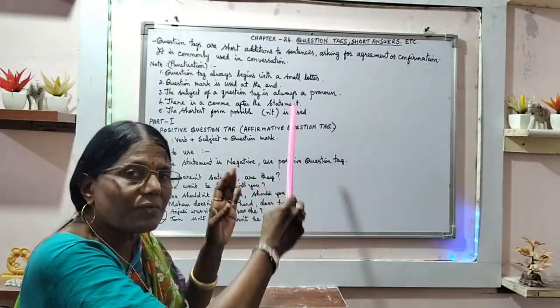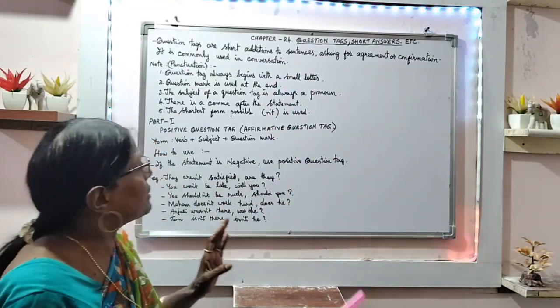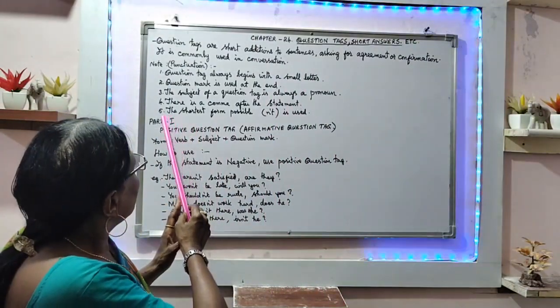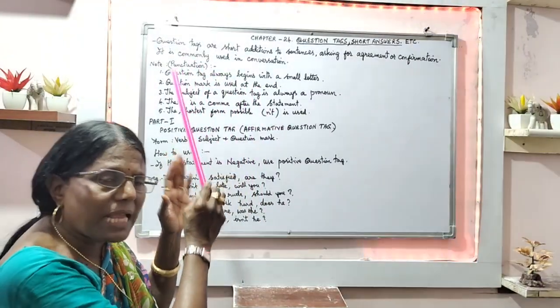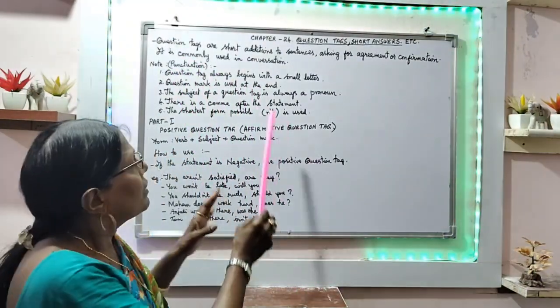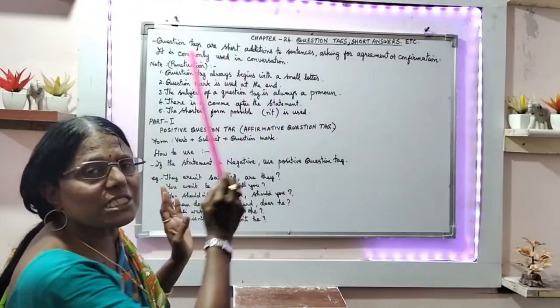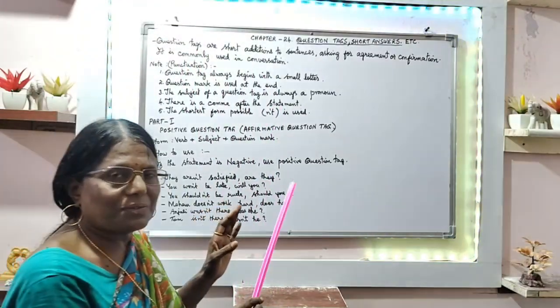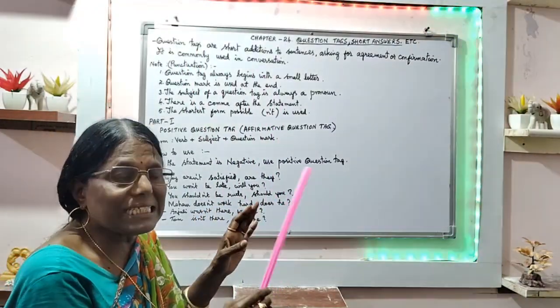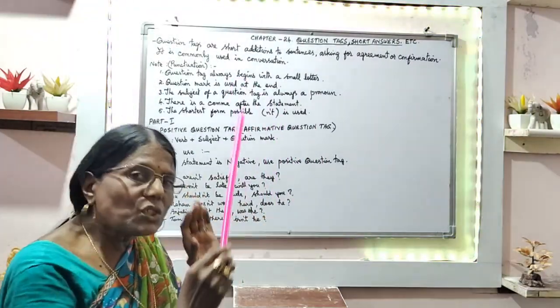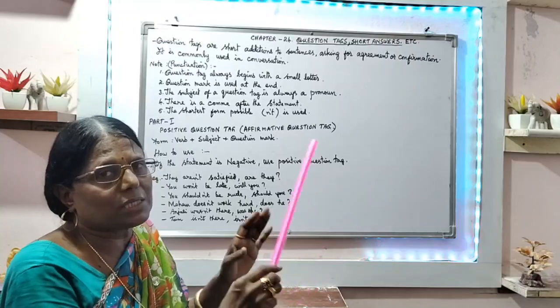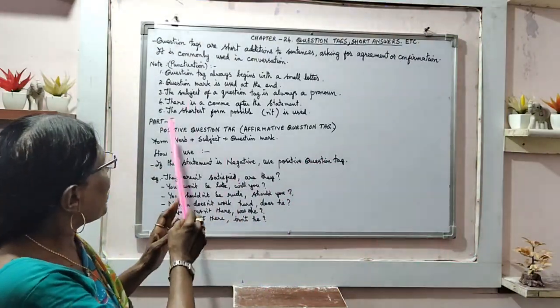That question tag, start with small letter and give the question tag. And then, the shortest form possible in this writing of question tag is n apostrophe t: didn't, wasn't, isn't. That is the shortest form of writing in that question tag.